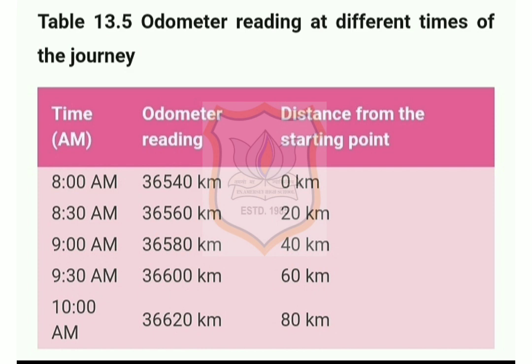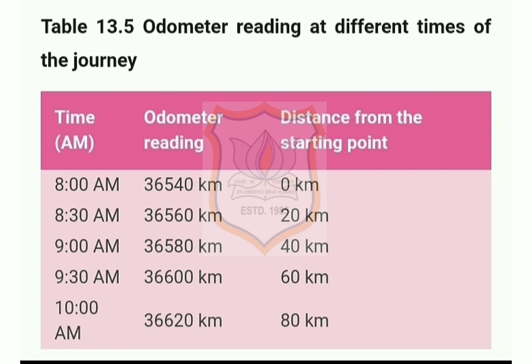You can see in table 13.5 the distance covered and time taken by the bus. The total distance covered by the bus is 80 kilometers. If we choose a scale of 1 kilometer = 1 centimeter, we would need to draw an axis of length 80 centimeters, which is not possible on a sheet of paper. A scale of 10 kilometers = 1 centimeter would require an axis of only 8 centimeters, which is convenient, though the graph may cover only a small part of the paper.